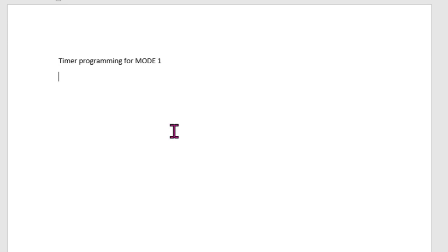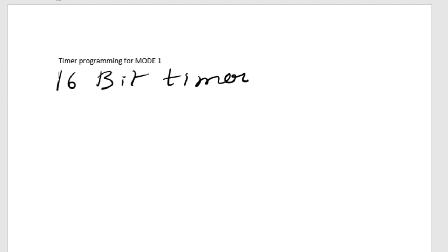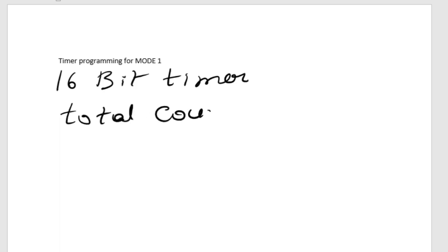When programming a timer in Mode 1, remember that it is a 16-bit counter register — a 16-bit timer. Whenever you program a 16-bit timer, there is a register related to it. The delay calculation and count calculation for a 16-bit timer follows a specific formula based on the total count or total counting events executed by the counter.